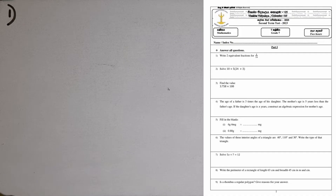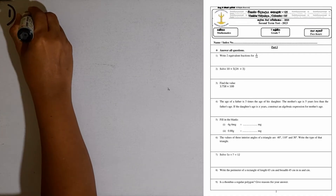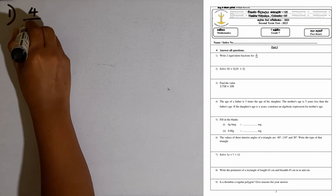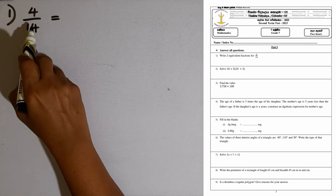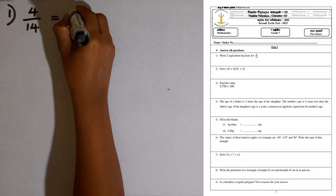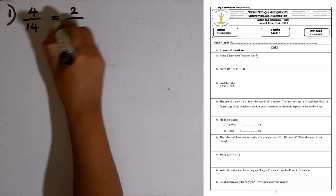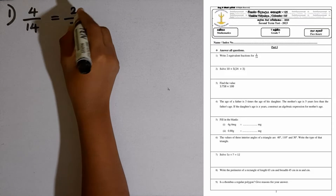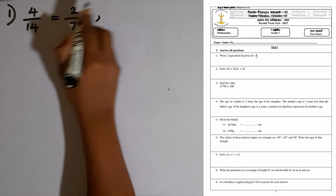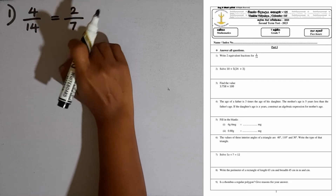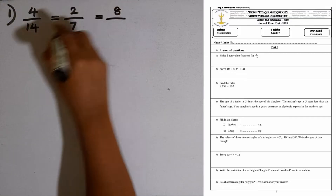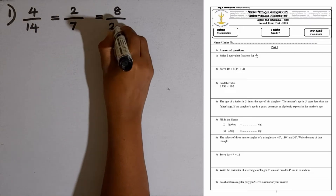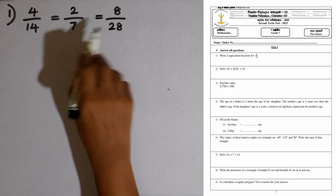Question number 1. Write 2 equivalent fractions for 4 over 14. We can divide both numerator and denominator by 2: 4 divided by 2 is 2, and 14 divided by 2 is 7. So this is one fraction. Or we can multiply both numerator and denominator by 2: 4 times 2 is 8, and 14 times 2 is 28. You can multiply or divide by any number.